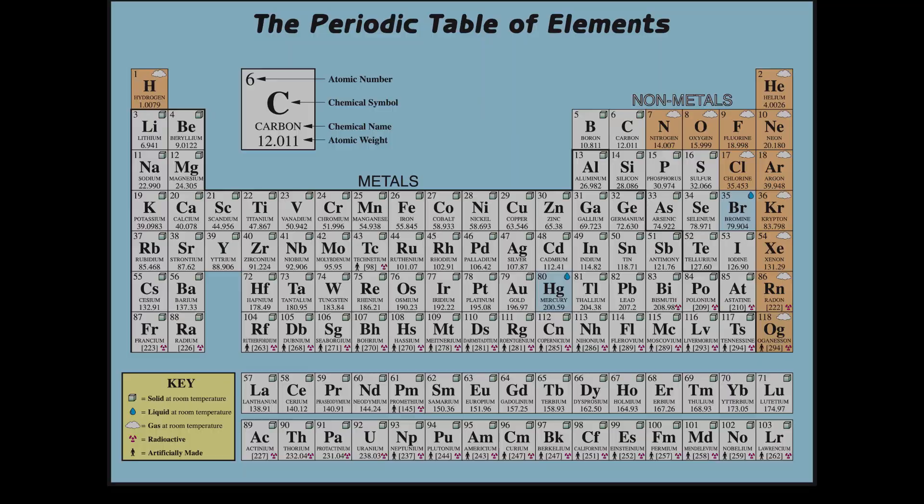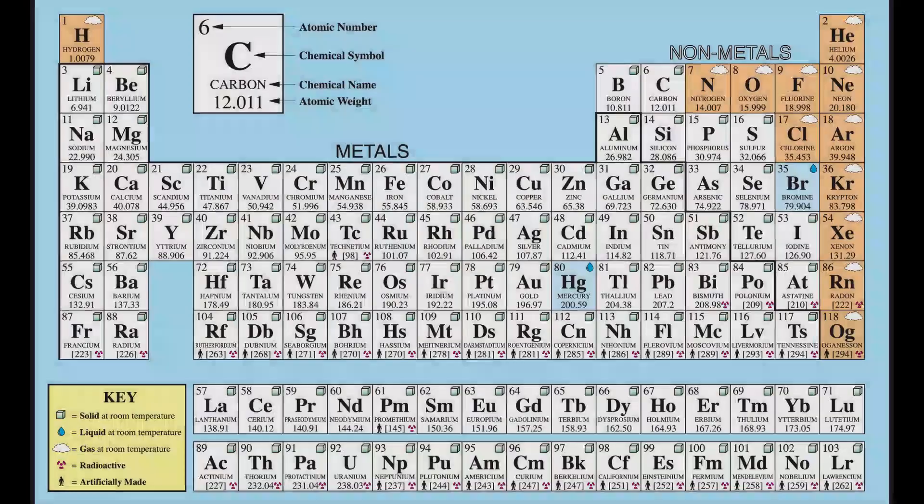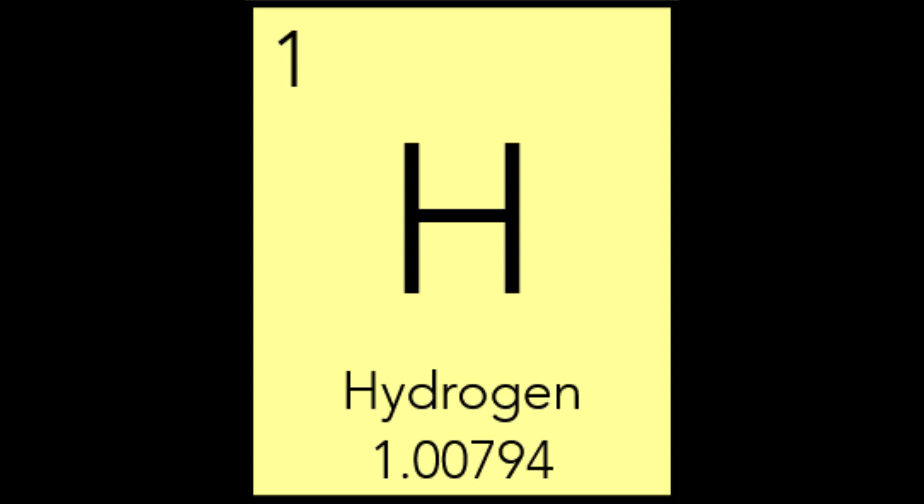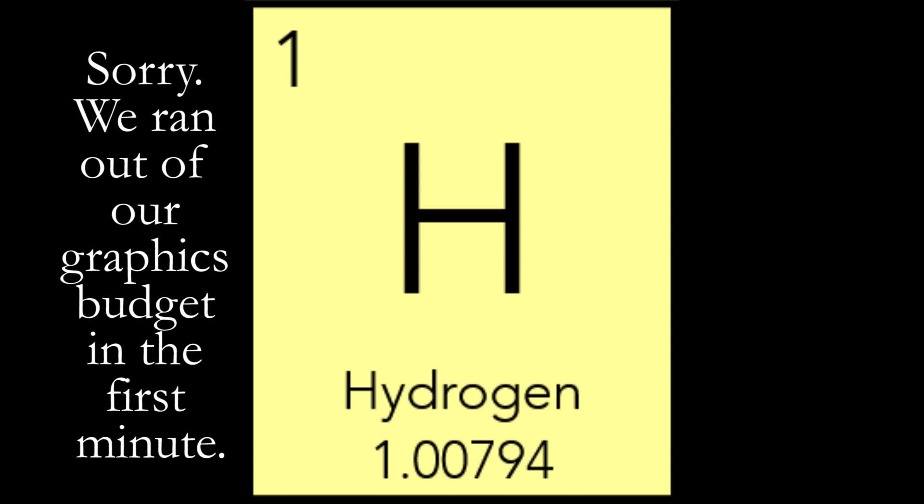I will stick to just etymology, or where these words came from, and some basic or interesting facts. There are 118 elements, so let's get started. With the symbol H, hydrogen is derived from the Greek hydro and genus, which means water former, because you get water when hydrogen gas is burned in air. The 'gen' comes from a similar place as 'generate'. It's the simplest element — one proton and one electron — the lightest element and the most abundant in the universe.